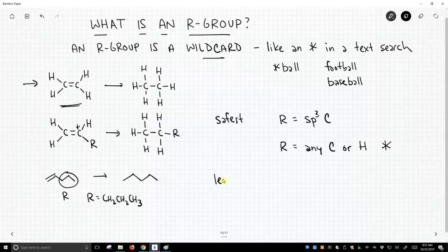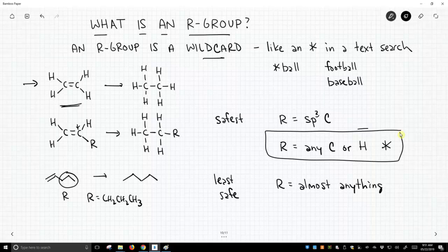The least safe is that R can be almost anything. It could be a chlorine, it could be an oxygen, it could be a carbon. This is rarely the case, but sometimes occurs. But this is what we are going to typically assume: when you say there's an R-group there, it could be any carbon or a hydrogen.